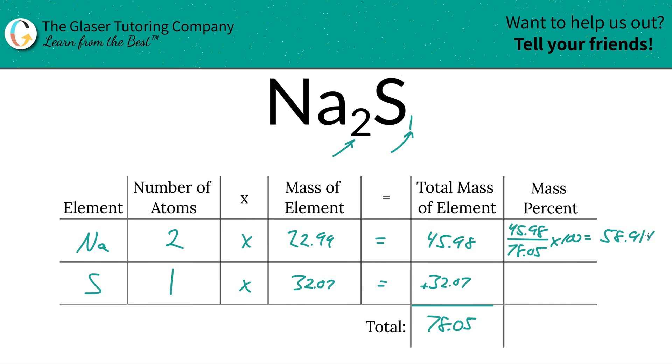And then for sulfur we're going to do the same thing. Total mass of the sulfur here 32.07 divided by the total mass of the entire compound 78.05. Multiply that by 100, don't worry about the units because they're all going to cancel anyway and it works out to be 41.09 percent.